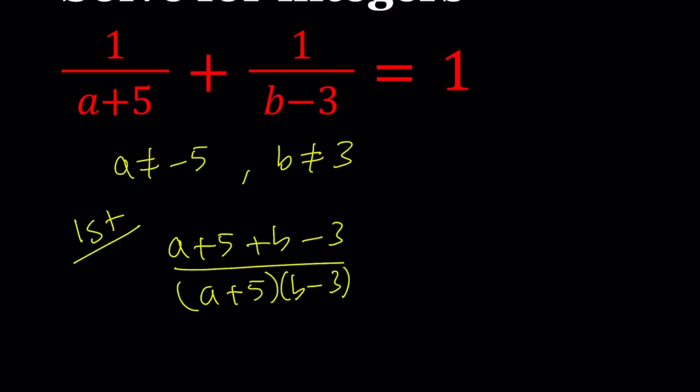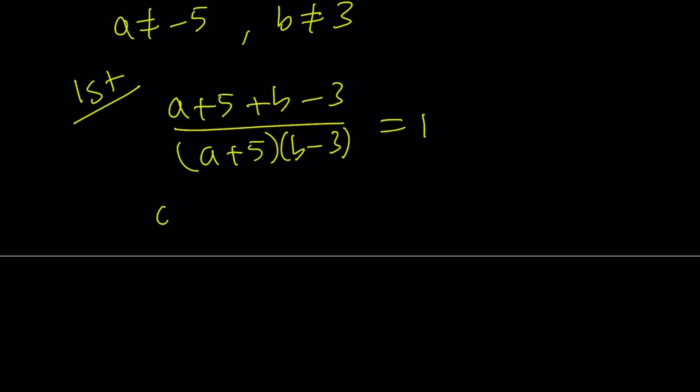But that equals 1, so we might as well just write it, the whole thing together. a plus b plus 2 is equal to the product. Let's go ahead and multiply this, distribute it, a b minus 3a plus 5b minus 15. Awesome.